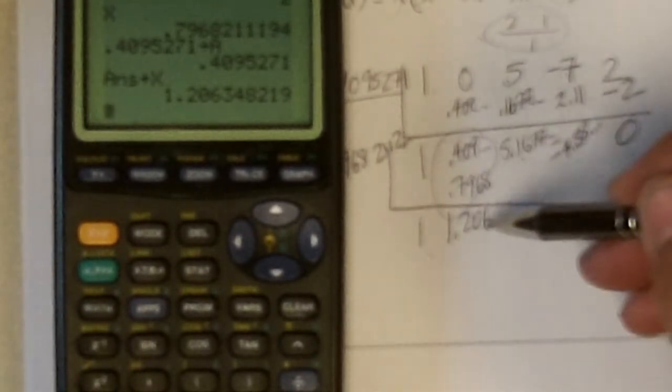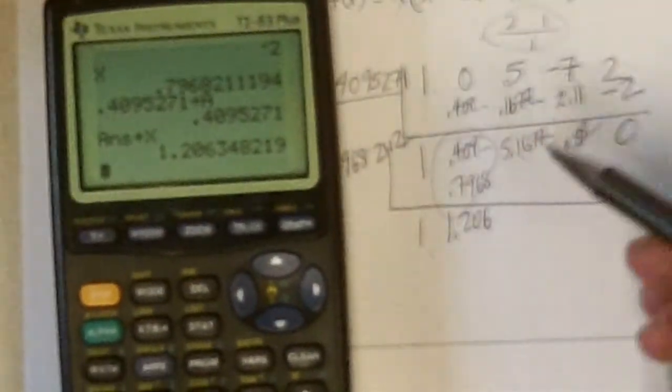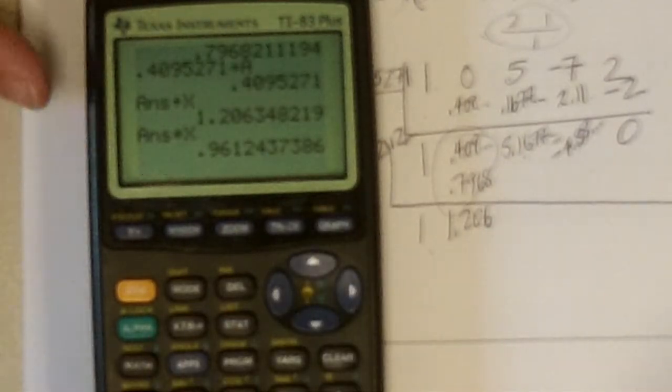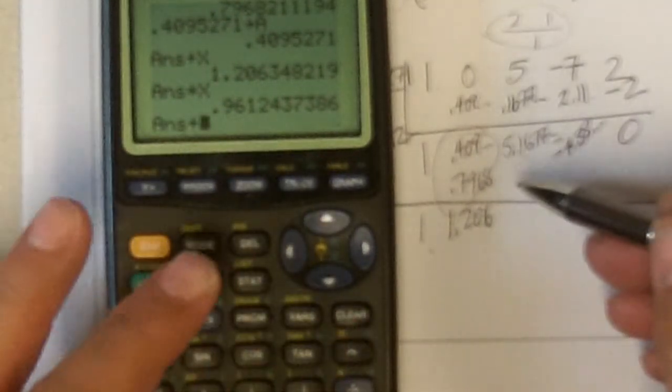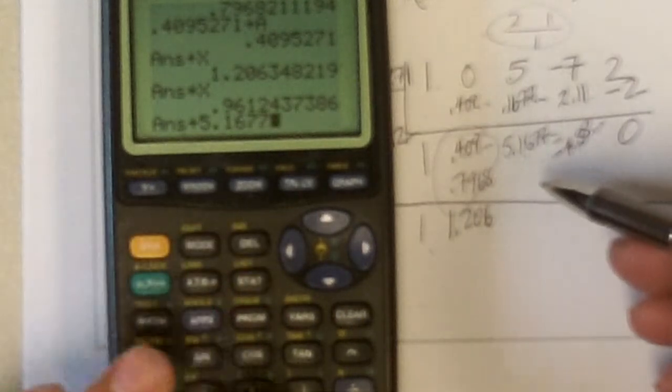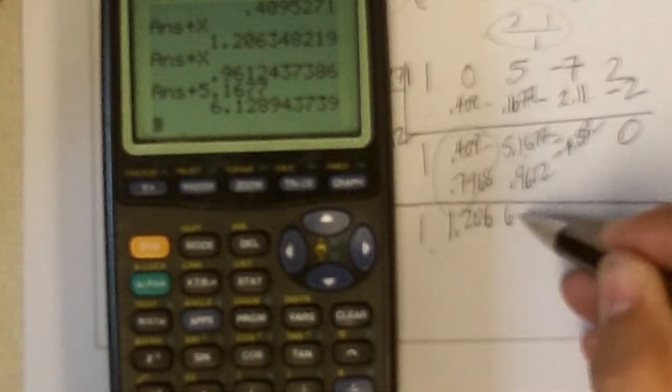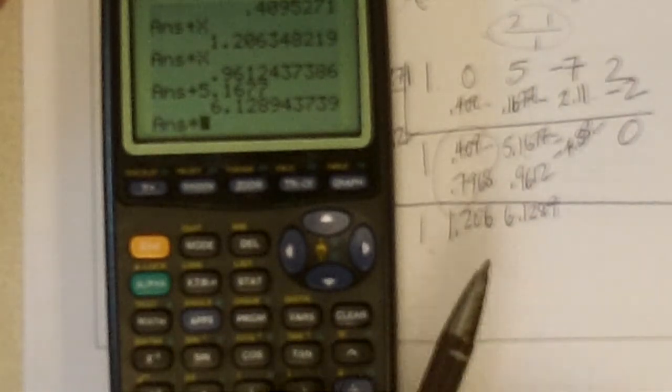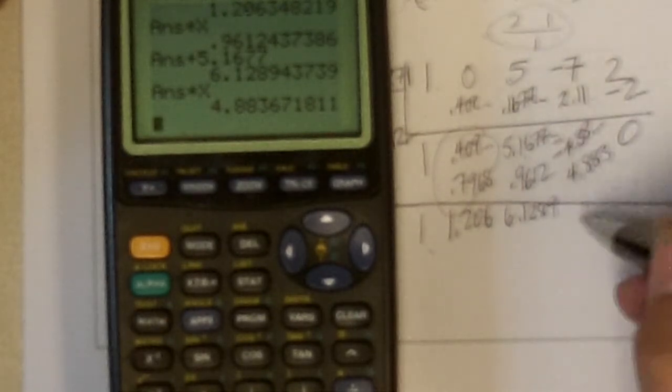It won't be this messy on the test. But. This one. My example here. I must have made a mistake when I multiplied. But anyway. I get that. And I got to take that times the X. Times X. Gives me this answer. And I got to add it to the five point one. Plus. Five point. One. Six. Seven. Seven. And there should be more here. But. That'll be close enough. I took this times X. Which was point nine. Six. One. Two. Add it to that. And I get. Six point. One. Two. Eight. Nine. Blah. Blah. Blah. And I got four point. Eight. Eight. Three. Which. In the negative. Adds up to be zero.